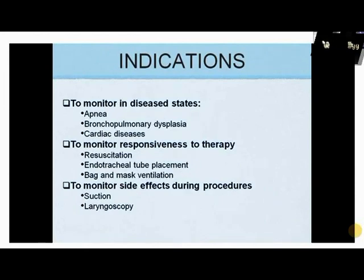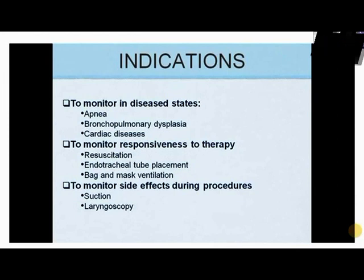Pulse oximetry is used to monitor SpO2 values in disease states like apnea, bronchopulmonary dysplasia, and cardiac diseases. It is used as part of resuscitation as per NRP 2010 to check endotracheal tube placement, effectiveness of bag and mask ventilation, and to monitor for hypoxia during suction and laryngoscopy.